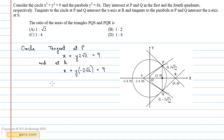These tangents intersect the x-axis at 9, 0, which is point R.